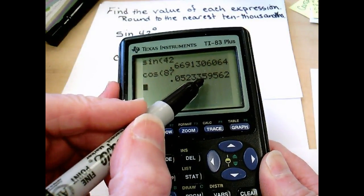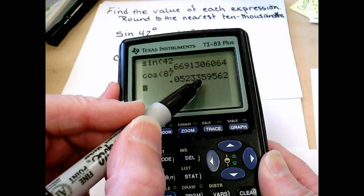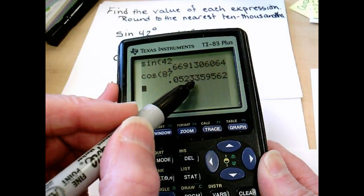And again, always look to the right, to the hundred thousandths place. If it's five or above, you round up. If it's not, you drop off.